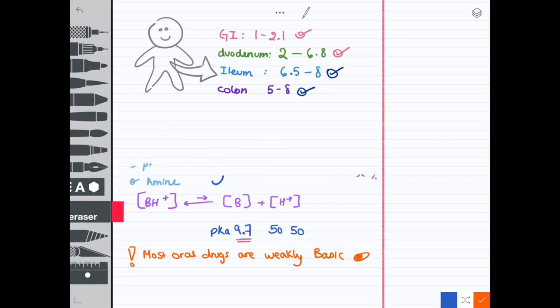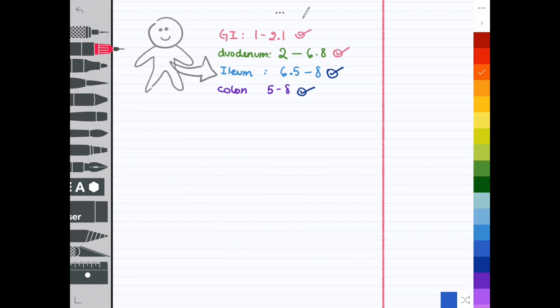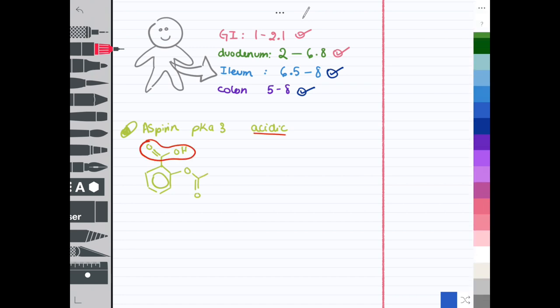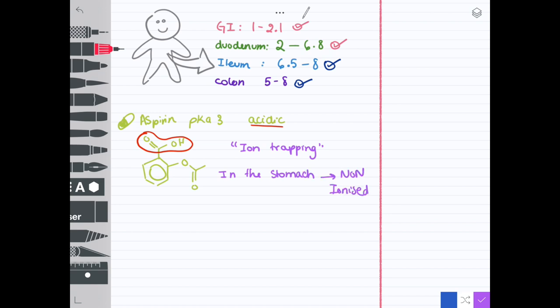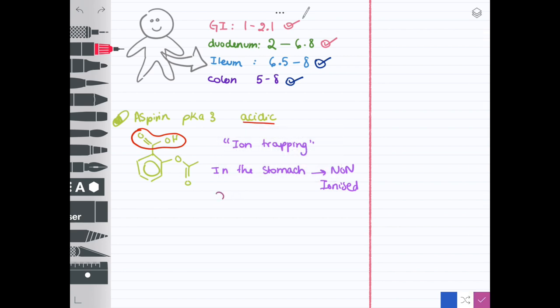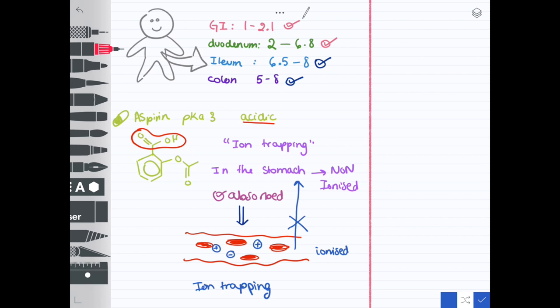Let's take another example. Aspirin is acidic and we know that by looking at its functional group—it has a carboxyl functional group. Its pKa is 3. This is a tricky one because you wouldn't use the regular equilibrium example. Aspirin is absorbed by a phenomenon known as ion trapping. In the stomach, it exists in the non-ionized form and is absorbed into the bloodstream because it's non-ionized, so it can cross through the lipophilic barrier. But when it enters the blood, it becomes ionized again and is prevented from going back to the stomach. The ion is trapped in the blood. That's ion trapping.